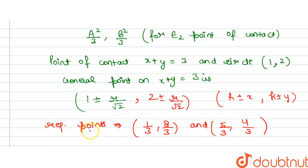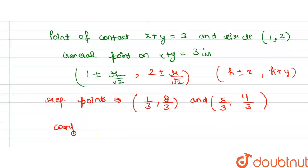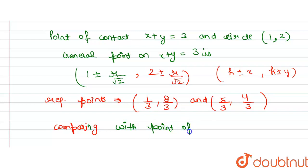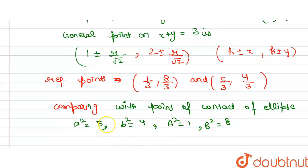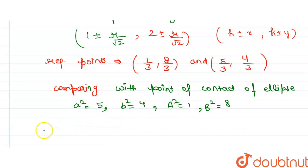Comparing with the points of contact of the ellipses, we get a² = 5 and b² = 4 for E1, and A² = 1 and B² = 8 for E2. Multiplying through by 3 and cancelling, we have the values needed to compute the eccentricities.